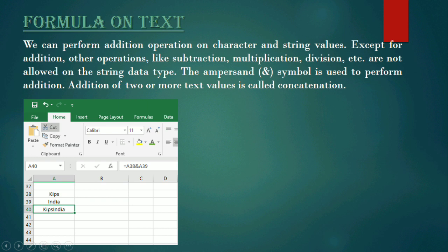Concatenation means joining two characters, or two words, or two text values together as a single text value. Here we joined the value in cell A38 and the value in A39 using the formula equal to A38 ampersand A39. So we can only perform the addition operation on text; the remaining operations cannot be performed on text values. Addition of two or more text values is called concatenation.